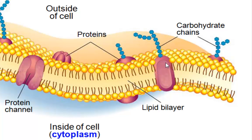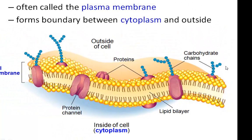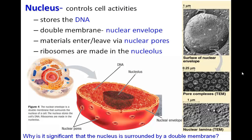We also have proteins embedded in the membrane as well as carbohydrate chains emerging out of the top. Even though the cell has a bunch of different structures doing different jobs, there is one structure that is regulating and controlling the whole system, and that of course is the nucleus. It controls the cell's many different activities. Within this nucleus is the DNA — these are the instruction manuals for how to run the cell. The DNA is so precious that it's actually surrounded by a double membrane, which we would call the nuclear envelope.